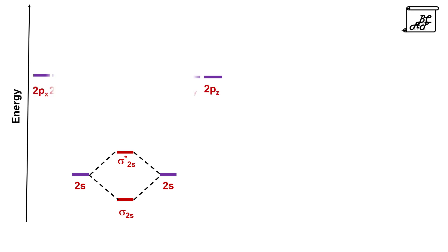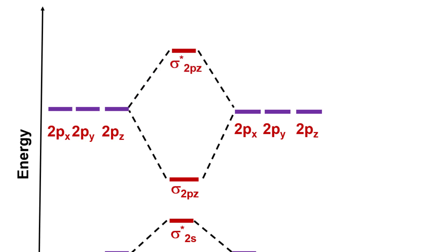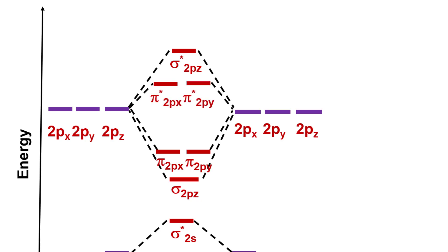Above the 2s orbitals there are 2p orbitals, namely 2px, 2py, and 2pz. From the postulates of molecular orbital theory, we have seen that the 2pz orbital participates in sigma bonding, and 2px and 2py orbitals participate in pi bonding. So 2pz orbitals overlap to form sigma 2pz and sigma star 2pz orbitals, while 2px and 2py orbitals overlap to form pi bonding and pi antibonding molecular orbitals.